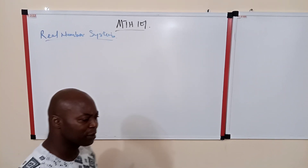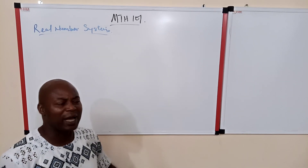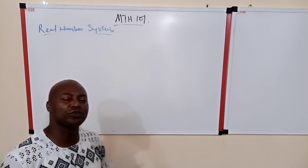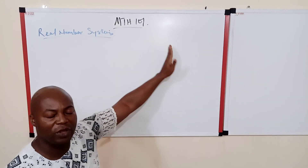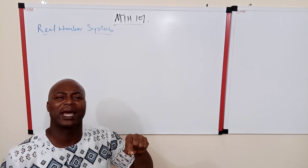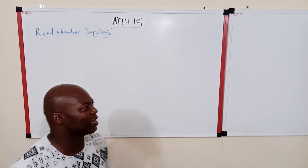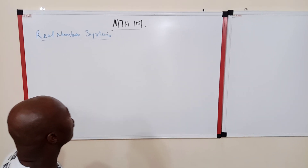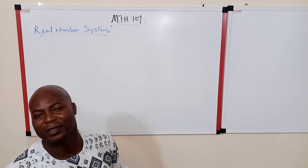Initially, anything that you can count — the number of people in a particular place, the number of houses in a particular location, the number of students in a particular class — those make up the natural numbers. You can count 1, 2, 3, 4, 5, and on we go. But there is also the possibility that at a particular point in time there is nothing in that place, and in such a case we consider things that are in that set to be zero.